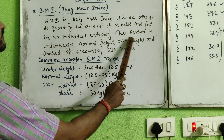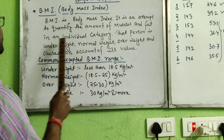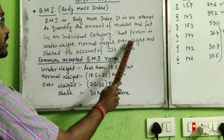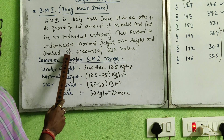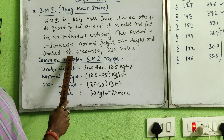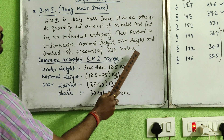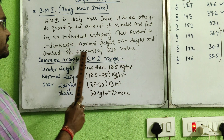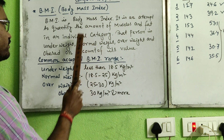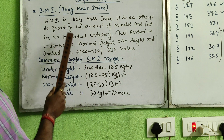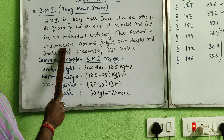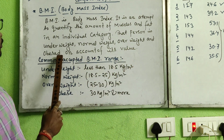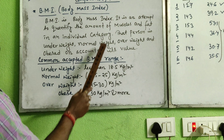For a human being, a person can be classified as underweight, normal weight, overweight, or obese based on their BMI value. We calculate that BMI value and then come to a conclusion about which category that particular person falls into.